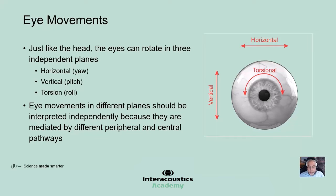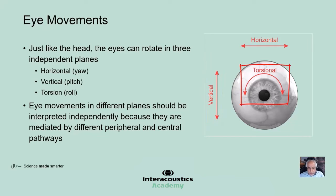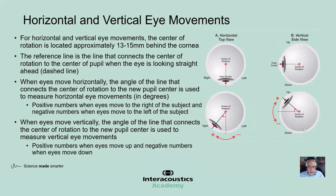Just as the head can move in three dimensions, the eyes can also move in three independent planes. They include the horizontal or yaw plane, the vertical or pitch plane, and the torsional or roll plane. When we consider eye movements in different planes, we should interpret each component independently because they are mediated by different peripheral and central pathways. Let's quickly review horizontal and vertical eye movements, which can help us with establishing conventions for torsional eye movements.